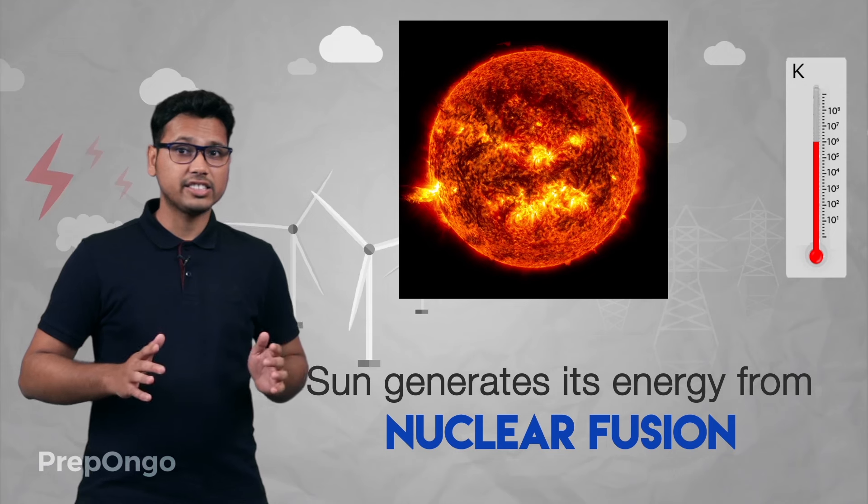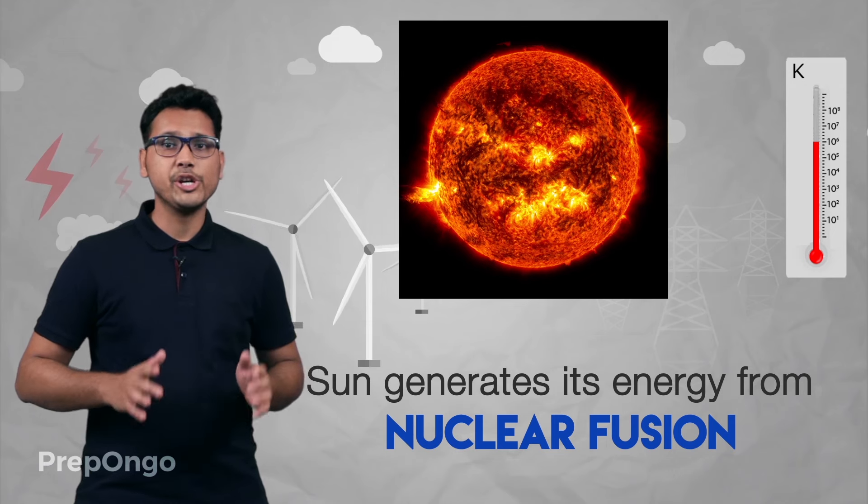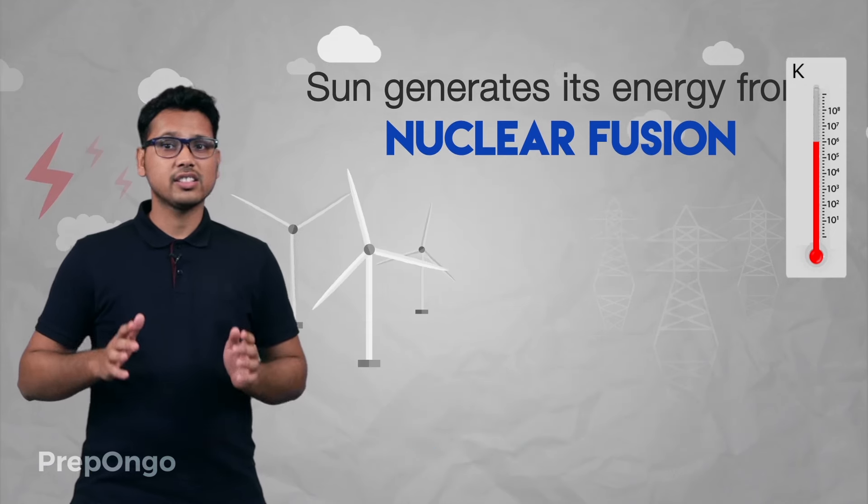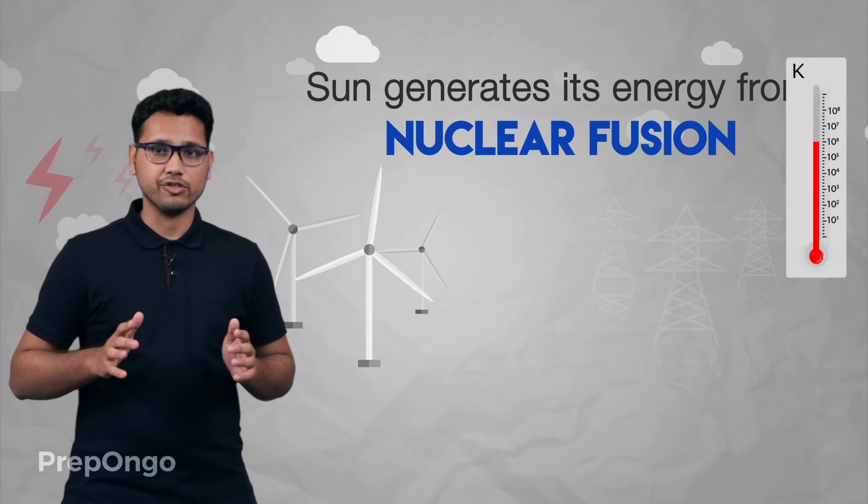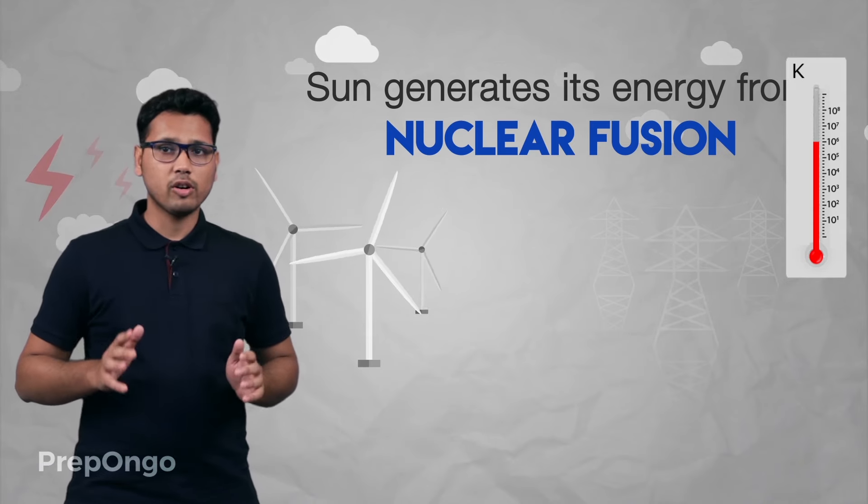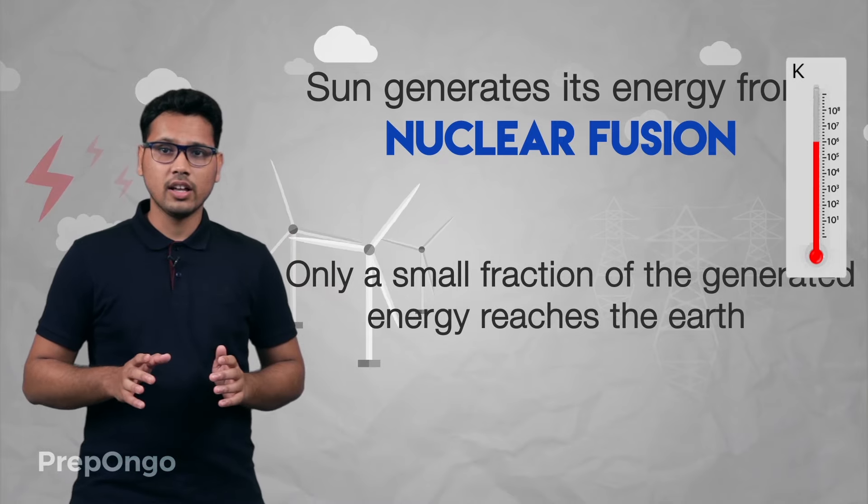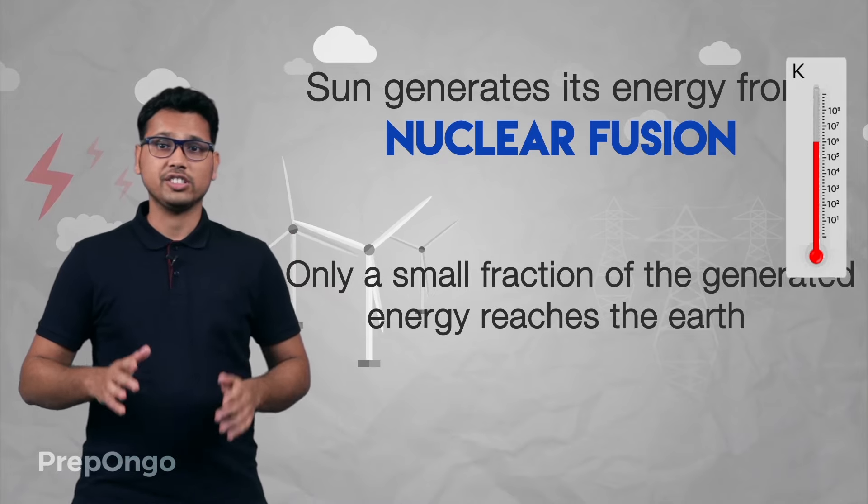The lighter nuclei of hydrogen combine to form helium and a huge amount of energy is liberated in this process. So the sun receives its energy from nuclear fusion. Only a small amount of this energy from the sun reaches the earth, which sustains life on this planet.